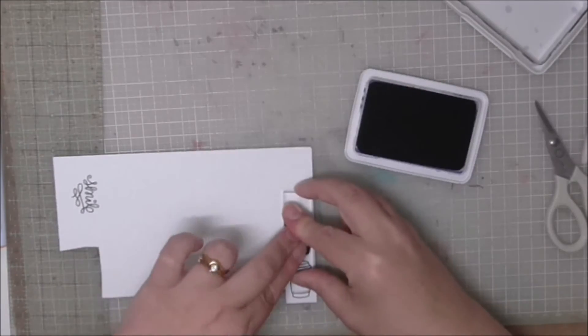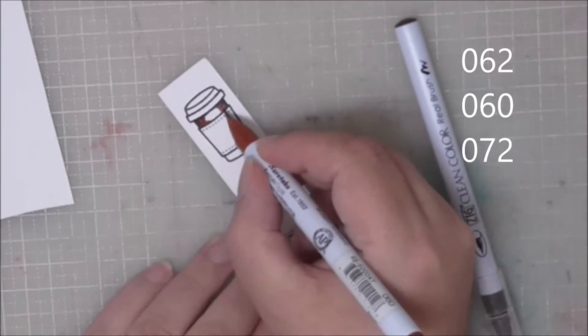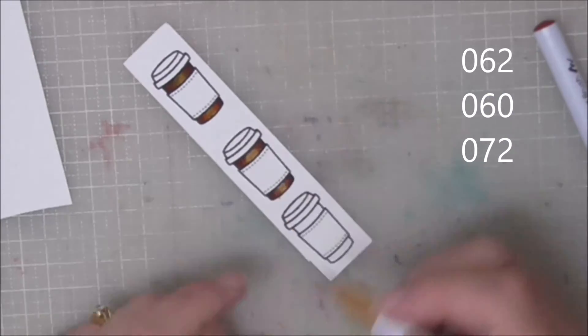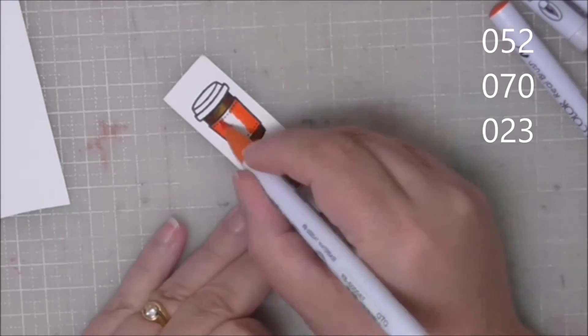I'm stamping the greeting with a bit of space about it because I am going to die cut it later on and I'm going to stamp three of the takeaway coffee cups in archival ink and just trim them away so we can get coloring. Now here I'm using the Clean Color Real Brush Markers by Zig, our brown colors are 062, 060 and 072,